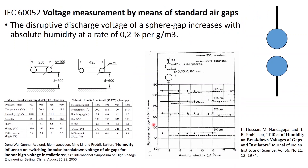Now, what is the relation between air humidity and breakdown strength of air? Here we have IEC 652, voltage measurement by means of standard air gaps. It says that the disruptive discharge voltage of a sphere gap increases with absolute humidity at a rate of 0.2% per gram per cubic meter. So for a sphere-sphere electrode with a uniform electric field, increasing moisture increases the breakdown strength slightly — only about 2% even at 10 grams per cubic meter. In this paper for a sphere-sphere electrode, the breakdown strength is more or less constant, maybe slightly increasing.